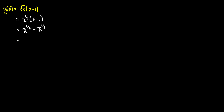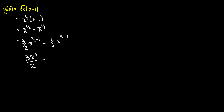Using the power rule on each term individually, for the first term we get 3 halves times x to the 3 halves minus 1, and for the second term minus 1 half times x to the 1 half minus 1. This simplifies to 3 halves x to the 1 half minus 1 half x to the 1 half, which we can also write using square root notation if preferred.